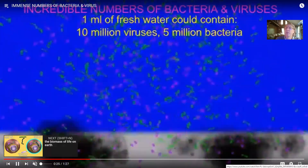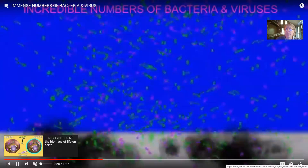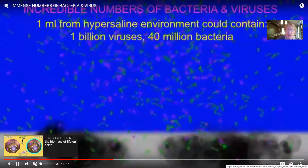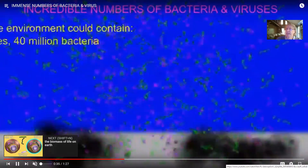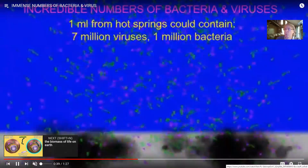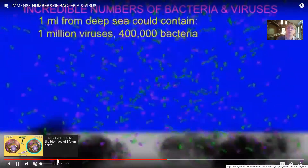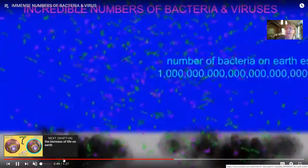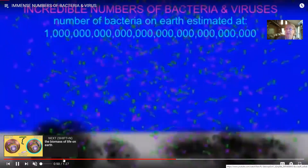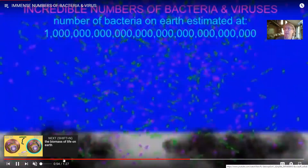Bacteria are the most abundant living things on the planet, which is one reason we study them. They are found in environments where we wouldn't automatically think that life exists - environments that are too hot, too much pressure, too acidic, or too salty - and yet microbes can be found there, with bacteria being the most abundant living thing on Earth.